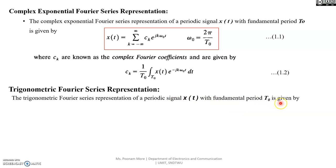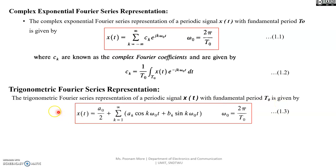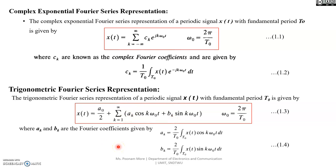Similarly, the trigonometric Fourier series representation of periodic signal x(t) with fundamental period T0 is given as a0 by 2 plus the summation of ak times cos(k omega_0 t) plus bk times sin(k omega_0 t), where k takes values from 1 to infinity and omega_0 is the fundamental angular frequency. Here, ak and bk are the trigonometric Fourier coefficients, evaluated using equation number 4.